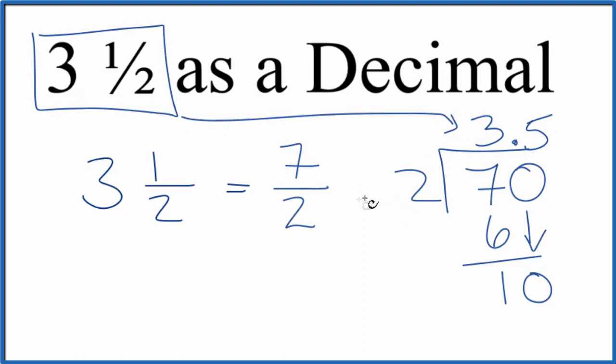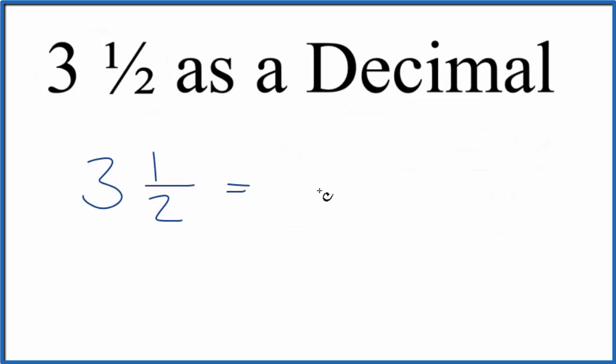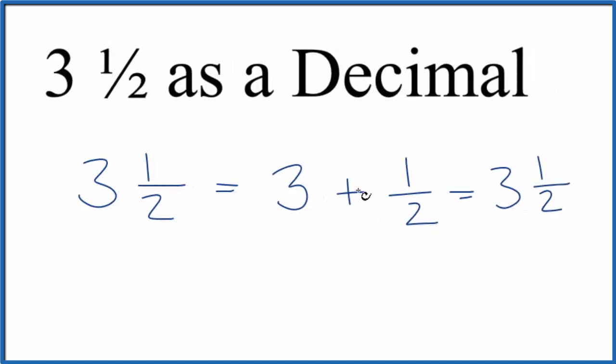Here's the other way you can do it. You can think of 3 and 1 half as 3 plus 1 half, that equals 3 and 1 half. But now we have this 1 half here, we could just convert 1 half to a decimal.